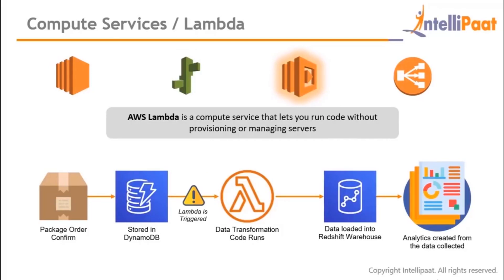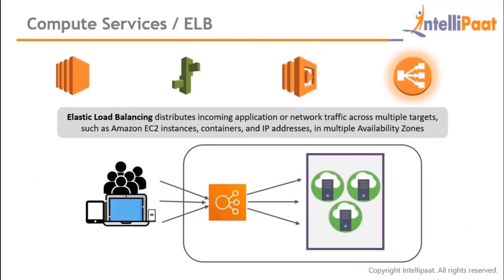AWS Lambda is a compute service that lets you run code without provisioning or managing servers. For example, on an e-commerce website, when you confirm a package order, the order details are stored in DynamoDB, and Lambda is triggered to run a data transformation code loaded into the Redshift data warehouse. After processing, it provides analytics created from the collected data.